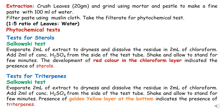For the phytochemical test, both sterols and triterpenes are tested using Salkovski's test. For the test of sterols, evaporate 2 ml of the extract to dryness. To evaporate, take the filtrate in a test tube and heat on a spirit lamp so that the water present in the filtrate evaporates, leaving only the residue.